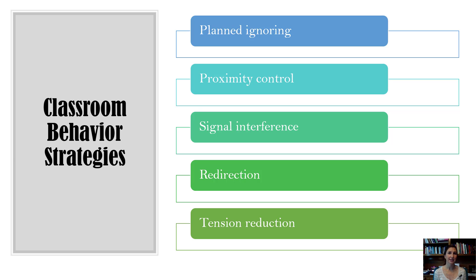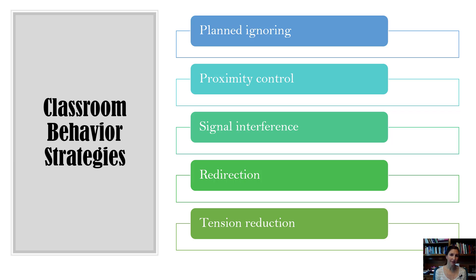Is the behavior occurring because they're getting attention from teachers or peers? Are they engaging in the problem behavior because they get out of something — escape from teachers, peers, a tangible item, or a worksheet? Planned ignoring really only works if the function of the behavior is attention. So if the behavior is maintained by attention, you can use planned ignoring and it's very, very effective.